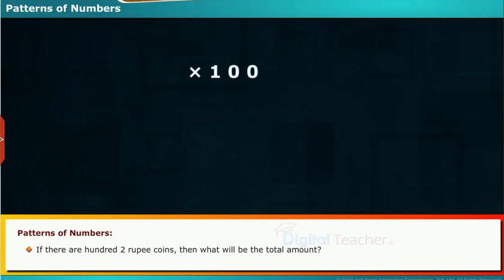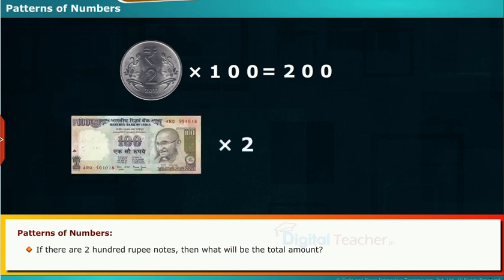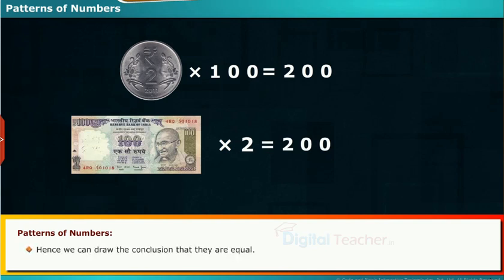Patterns of Numbers: If there are 102 Rupee Coins, then what will be the total amount? The amount is Rupees 200. If there are 200 Rupee notes, then what will be the total amount? In this case, also the amount is the same. Hence, we can draw the conclusion that they are equal.